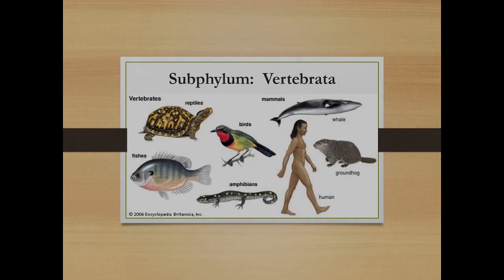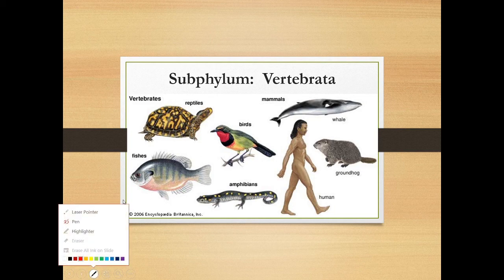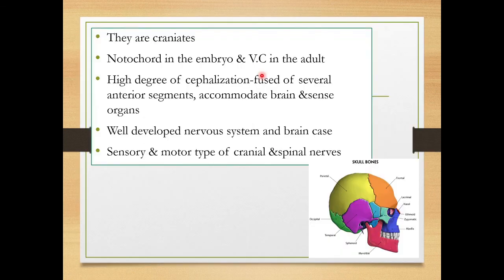Welcome to the new video on subphylum Vertebrata. These are the different types of vertebrate animals. The general features of Vertebrata: they are craniates because they possess skull bones. The notochord is present only in the embryo but not in the adult, which is completely replaced by the vertebral column, hence it is called Vertebrata.